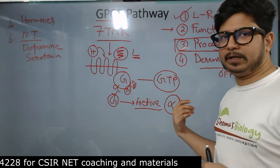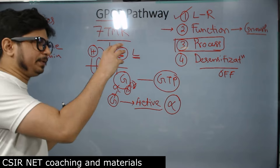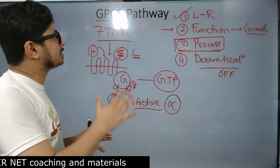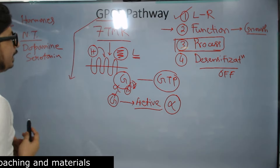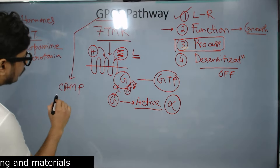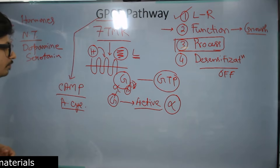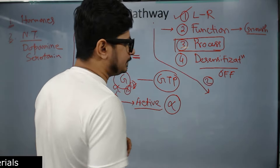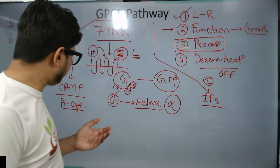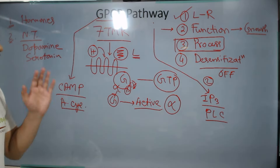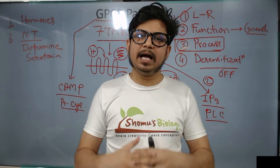The moment GTP gets hydrolyzed to GDP from the alpha unit, the alpha G-protein gets inactivated again. Now that we understand the fundamentals of GPCR and G-protein, we will dig into the process of the GPCR pathway. There are two ways the GPCR pathway works. Way number one is via formation of cyclic AMP — the cyclic AMP pathway, involving an enzyme known as adenylyl cyclase. The second pathway is the IP3 pathway, where the enzyme involved is phospholipase C, or PLC.